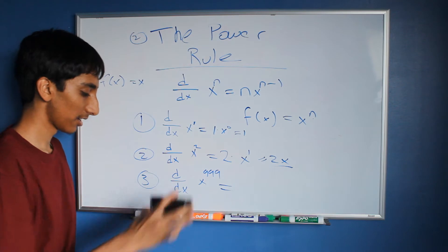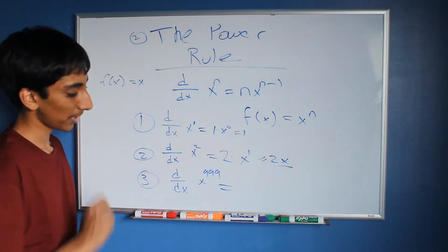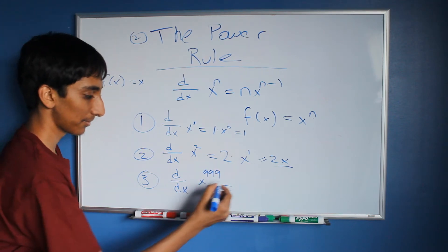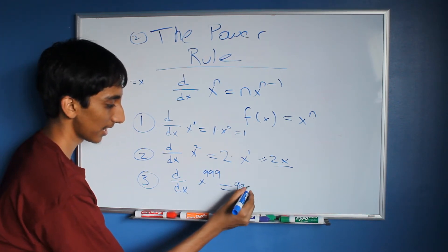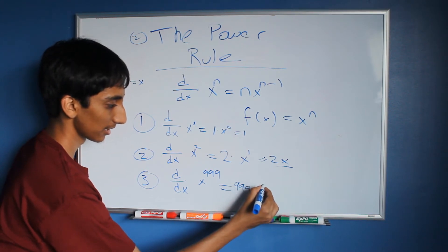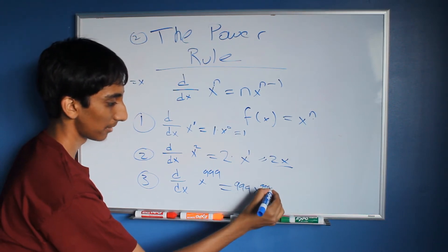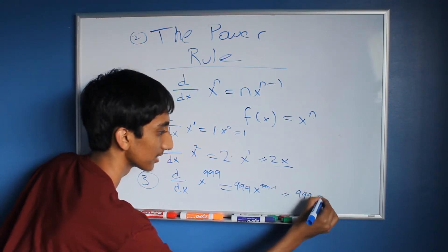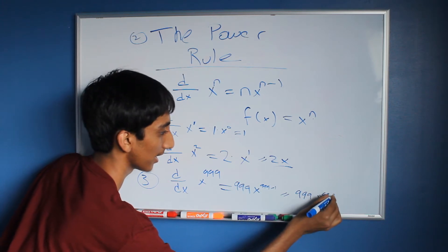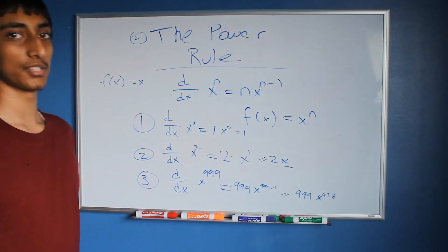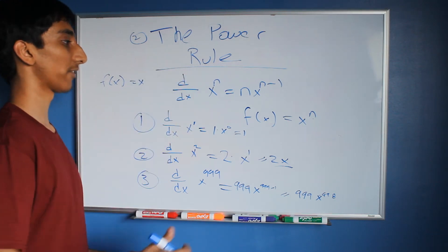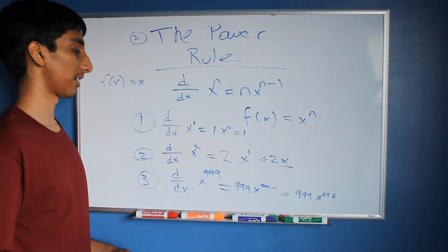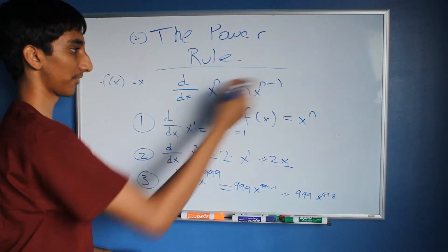Now the derivative with respect to x of x to the 999th power — it's the exact same thing. We bring 999 down, times x to the 999 minus 1, which equals 999x to the 998. That's the power rule: if you have x to the n, bring the n down and subtract it by 1.